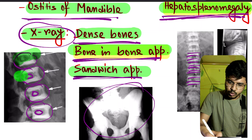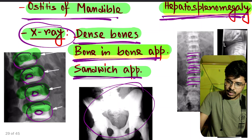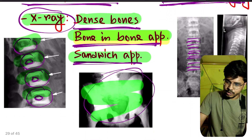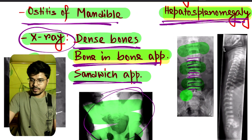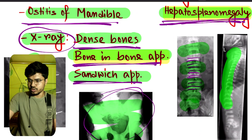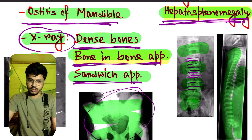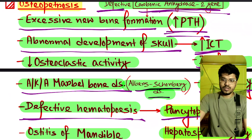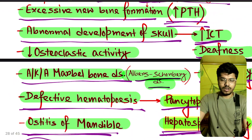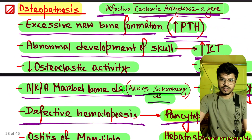This is the bone-in-bone appearance. This is the dense bone appearance. This is the sandwich appearance. And this is also a picture of osteopetrosis.